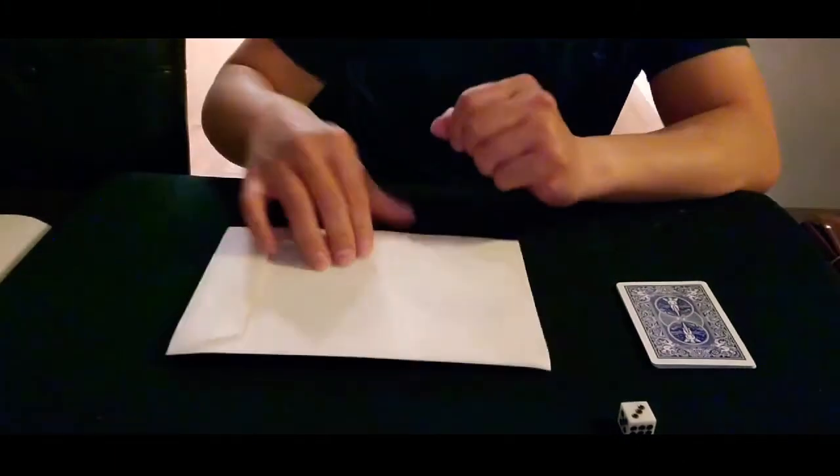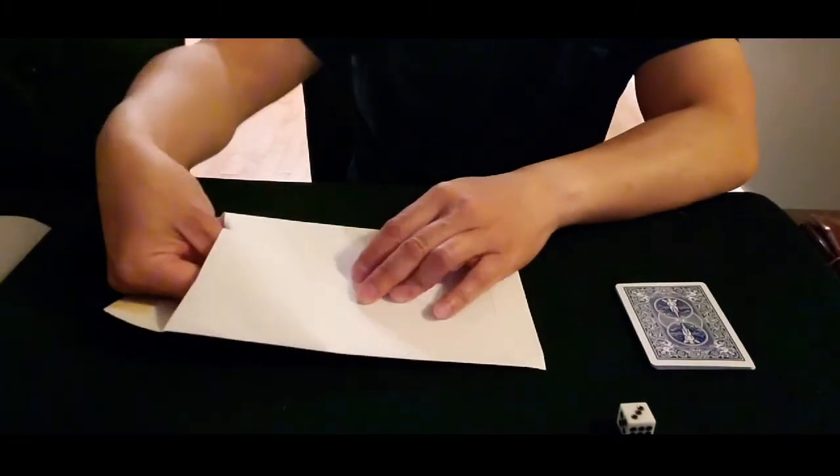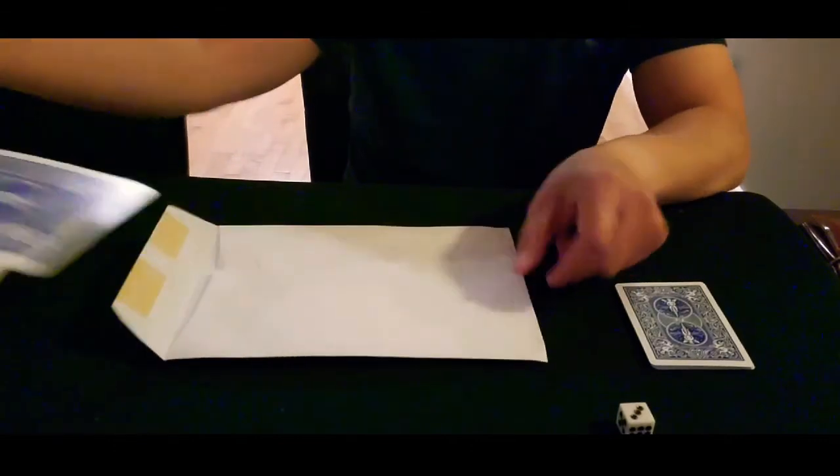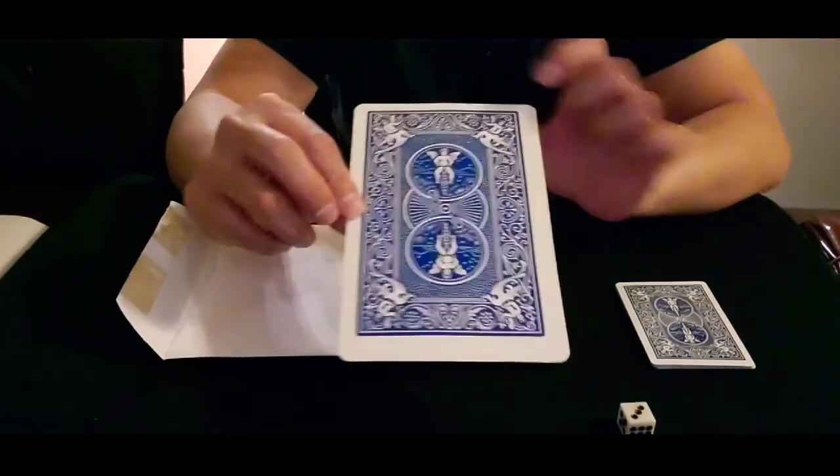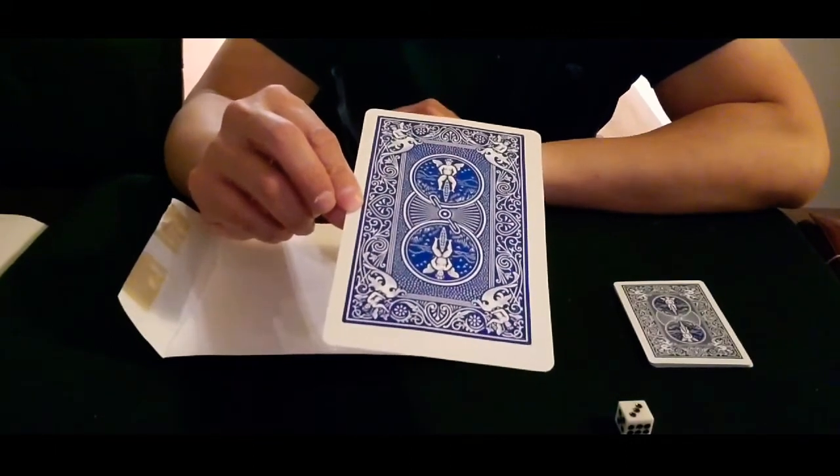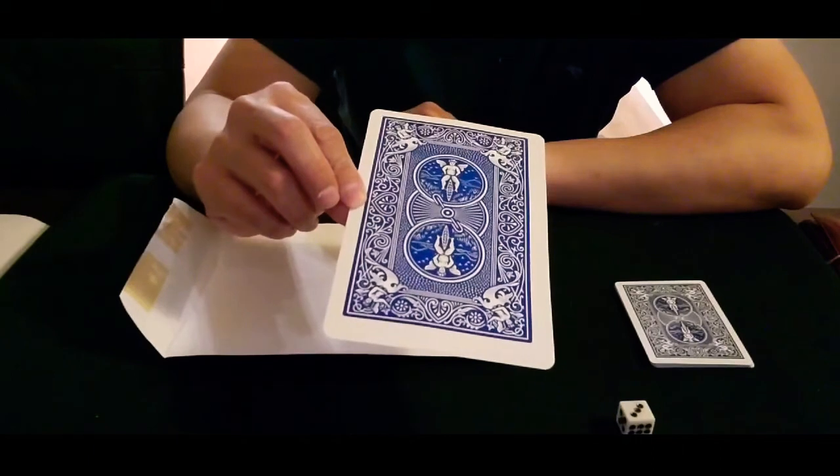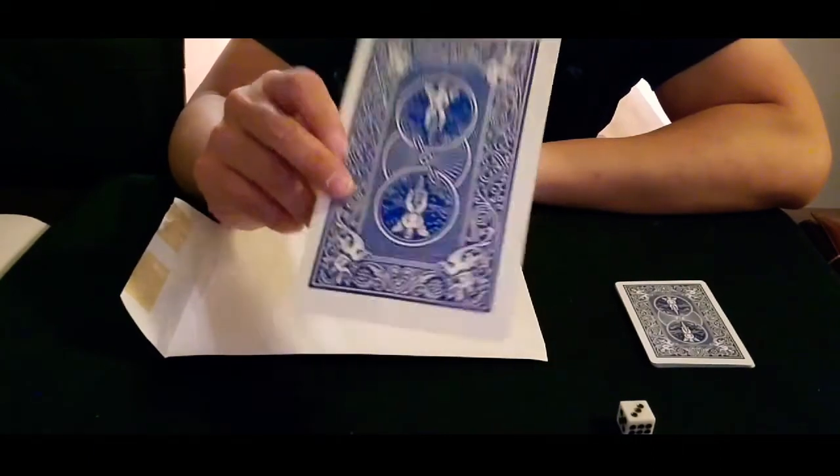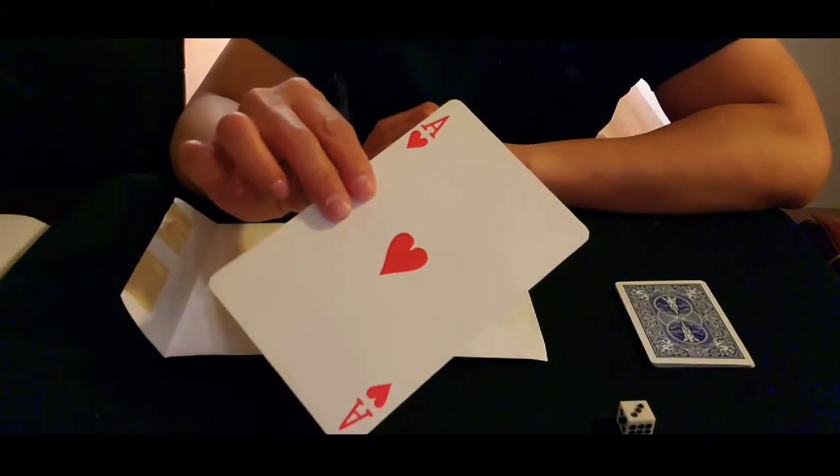Let me show you the prediction. This is a jumbo, jumbo blue bicycle card. The prediction is the ace of heart.